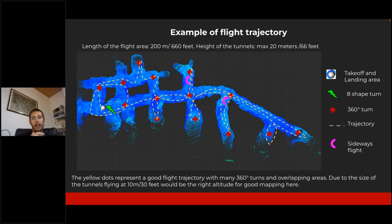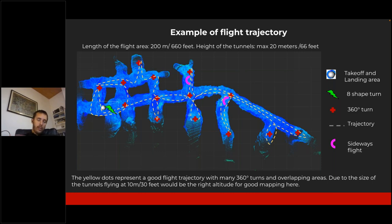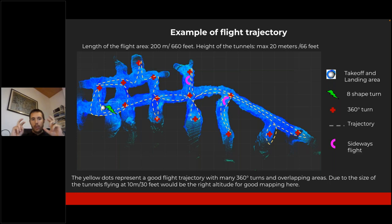The area is about 200 meters long — 600 feet — and 20 meters in height. Knowing that in advance, I decided to fly at roughly 10 meters altitude, or 30 feet, to get high accuracy on the top and bottom for the LiDAR. You should always prepare a mapping flight in advance: know where and how you will fly. If you don't have a blueprint or sketch, you can do a reconnaissance flight with the drone first to understand the facility, and then do your mapping flight following those good practices.